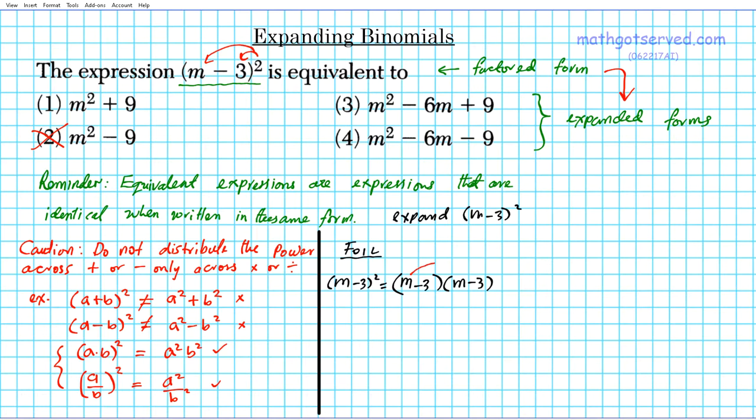So the foil method, you go first, outer, inner, last. You can always use the foil method because we're multiplying two binomials. So we multiply the first, m times m is m squared. Outer, m times negative three is negative three m. Inner, negative three times m is negative three m. Last, negative three times negative three is plus nine.